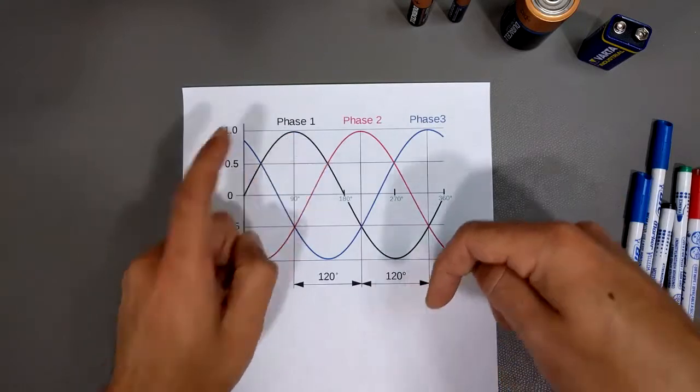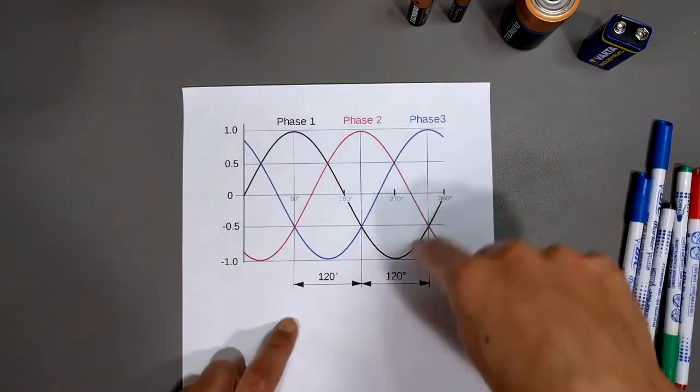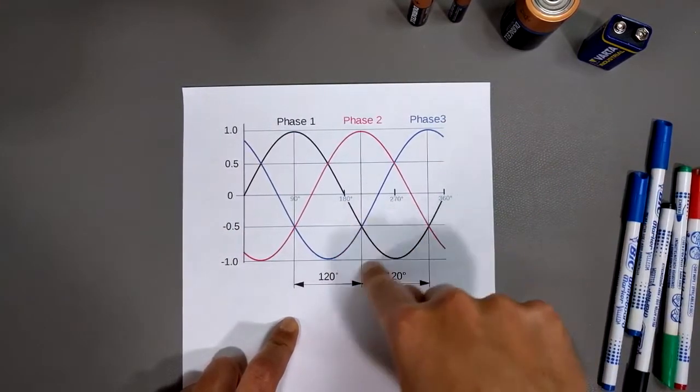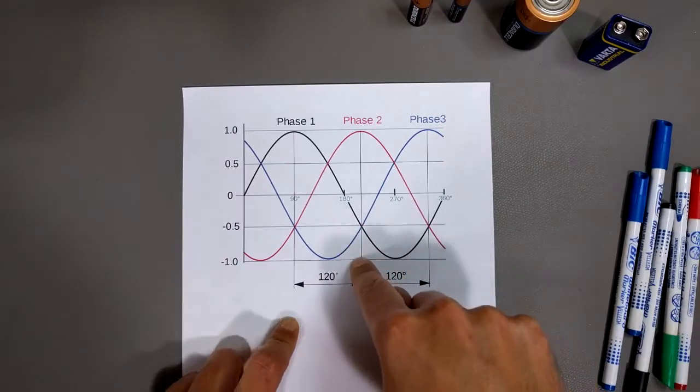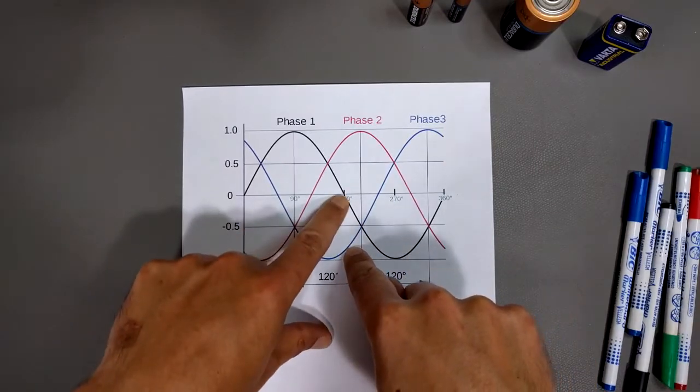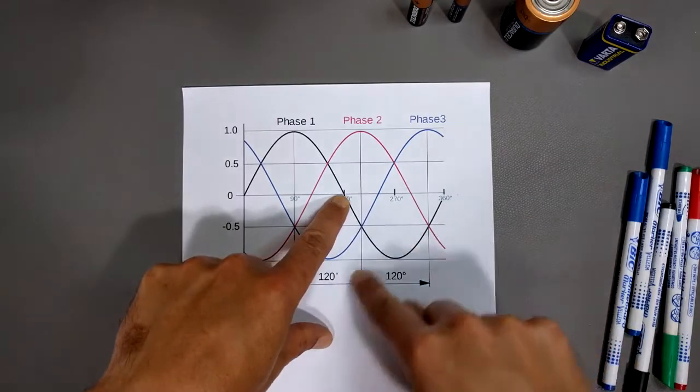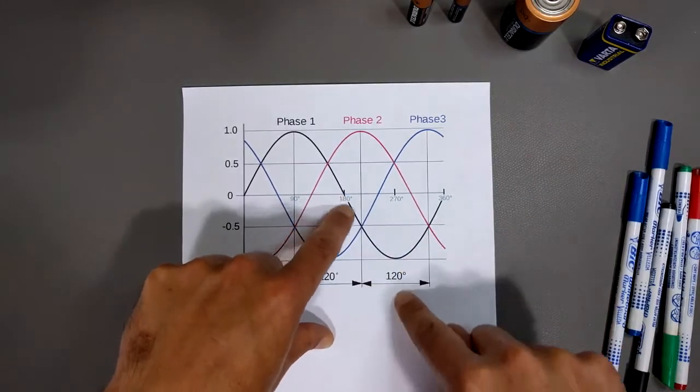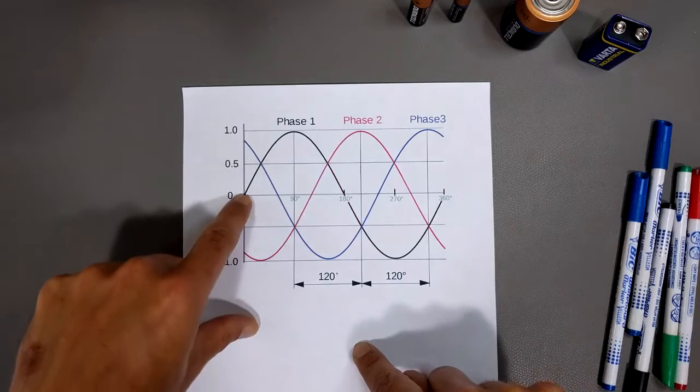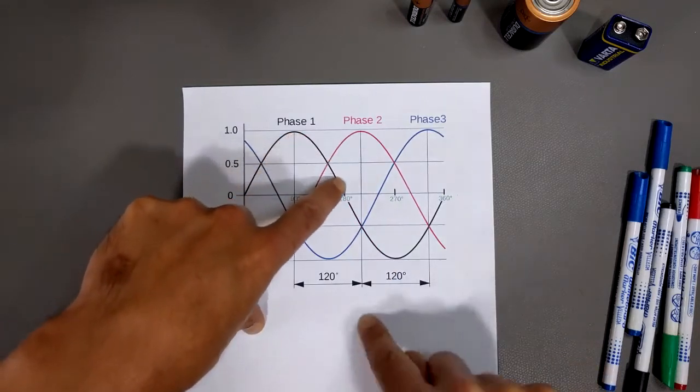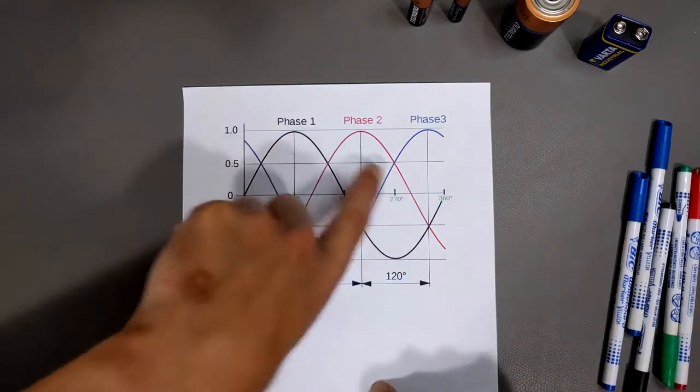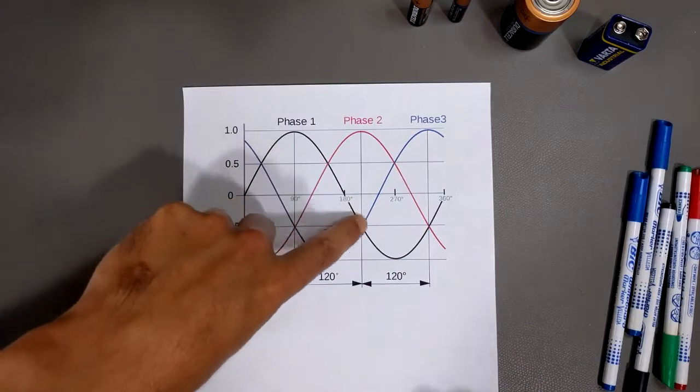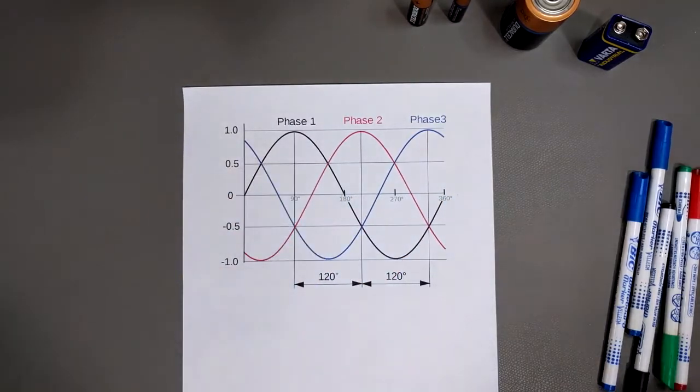And then it starts to descend, which means it slows down until it hits the zero point. And then it reverses direction and goes back in the other direction until it goes down. And then it slows down. And then it gets here and reverses direction. That's pretty much it.